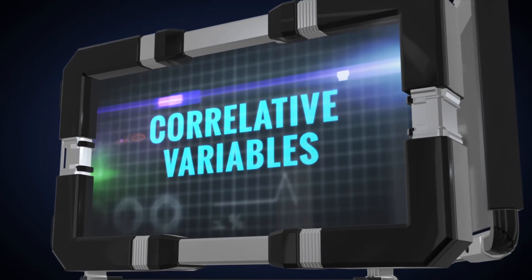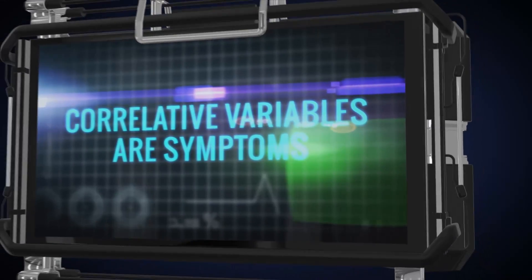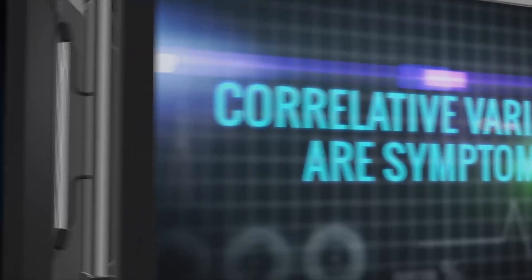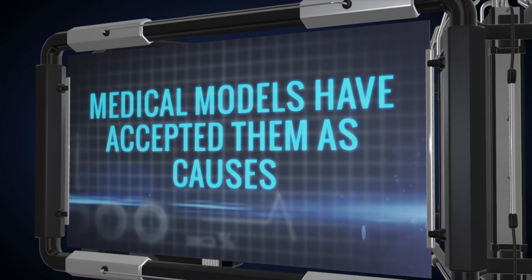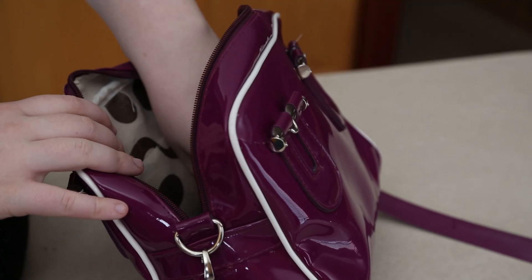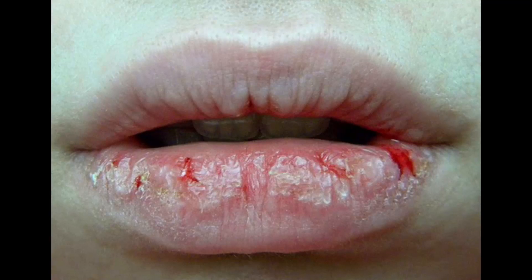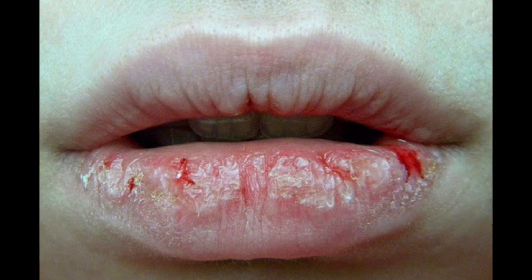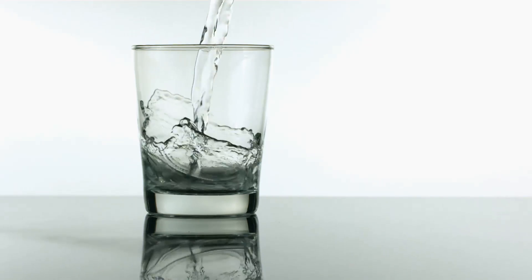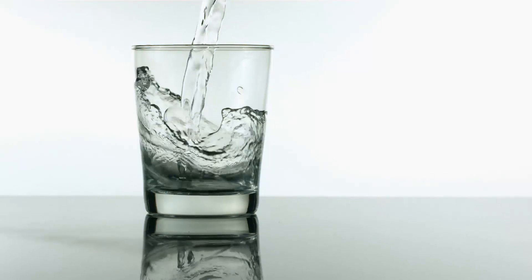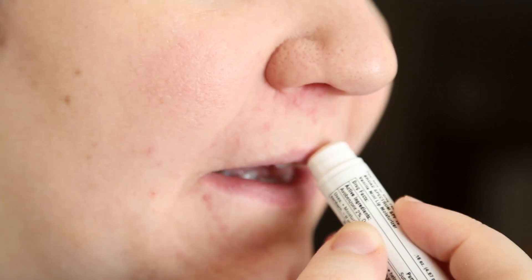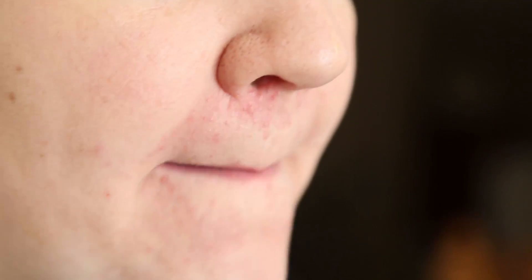The second pillar is correlative variables. Correlative variables are in fact symptoms of the disease state, but many medical models have accepted them as causes instead. A simple comparison is dehydration. It is common in patients who are dehydrated to have chapped lips; however, chapped lips do not cause dehydration. They are simply a correlated variable, and until the patient begins to take in sufficient fluids, the dehydration will continue no matter how much chapstick is applied.